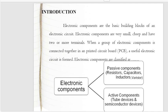Electronic components are the basic building blocks of any electronic circuit. Electronic components are very small, cheap, and have two or more than two terminals depending upon the component. When a group of electronic components is connected together in a PCB, or printed circuit board, a useful electronic circuit is formed.